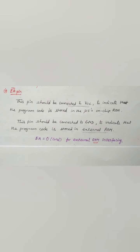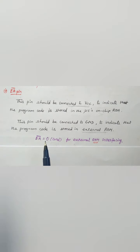The EA bar pin has two configurations. First, this pin should be connected to VCC to indicate that the program code is stored in the microcontroller's on-chip ROM — meaning the program is stored in internal ROM memory. Second, this pin should be connected to ground to indicate that the program code is stored in external ROM. EA bar equal to 0 means connected to ground for external ROM interfacing.